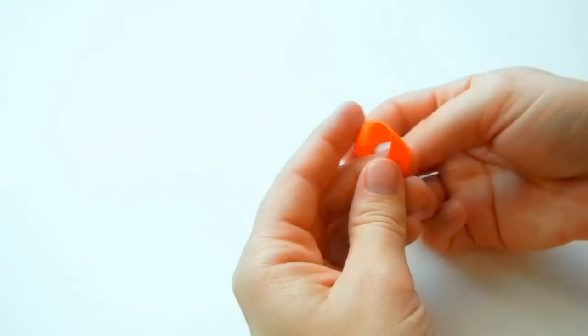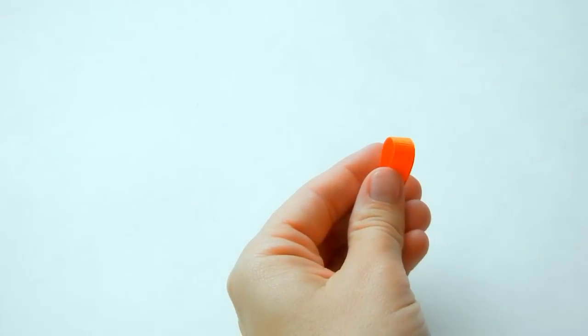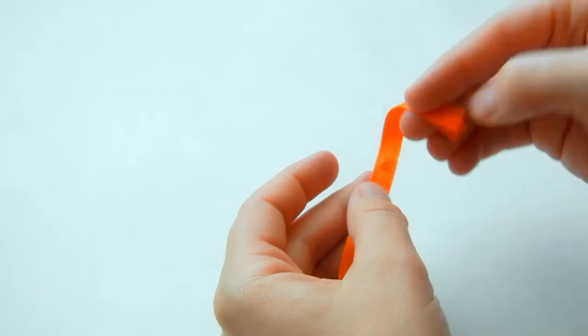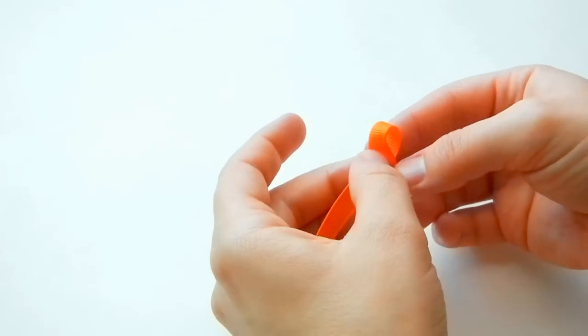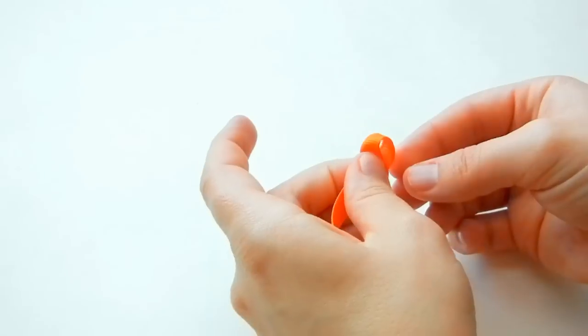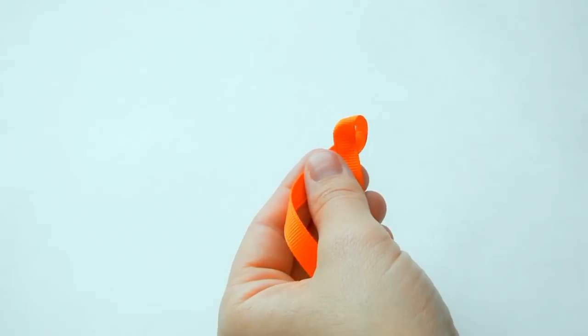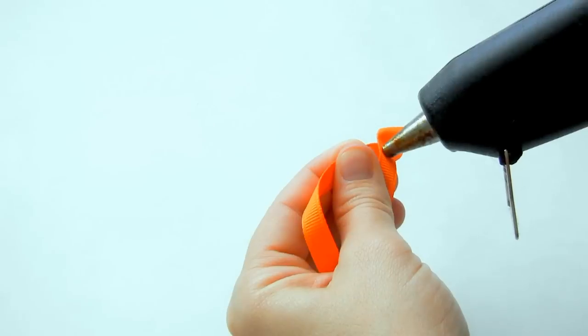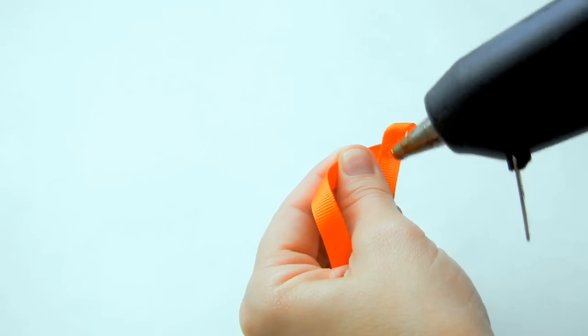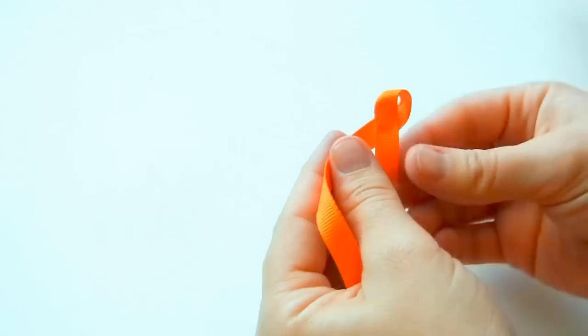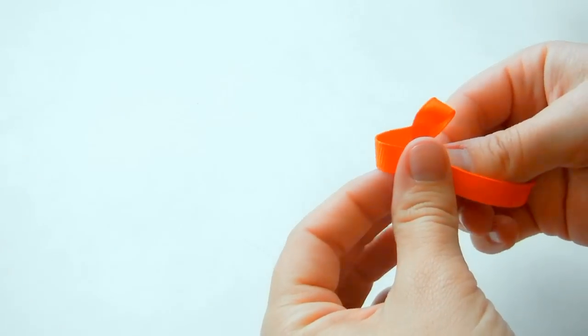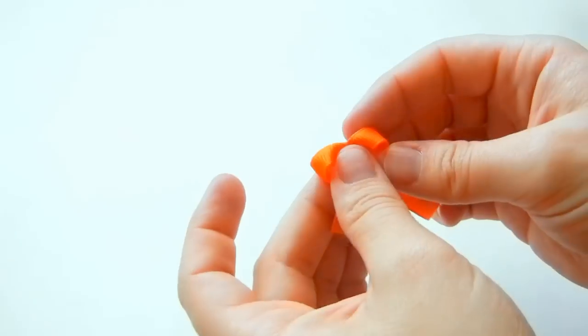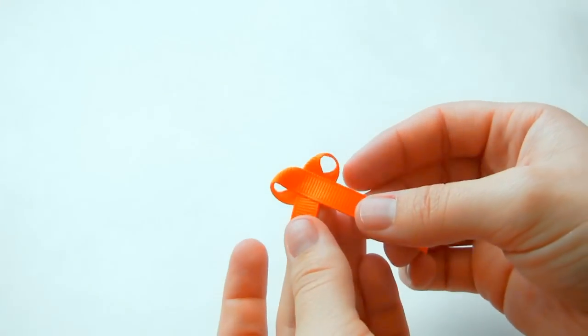Take your hot glue gun and place hot glue where that loop is going to come over. And then you just bring it around and glue it down. And then place a little bit more hot glue right there and bring the other side down. And then you've got your bow.